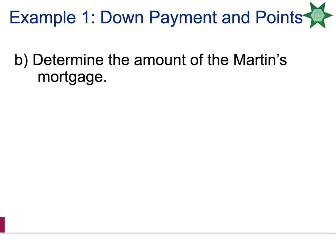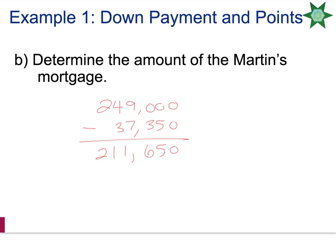Determine the amount of the Martins' mortgage. The purchase price of the home was $249,000 and the amount of their down payment is $37,350. If you subtract these, this will be how much they are borrowing from the bank — they need to borrow $211,650. So this will be the amount of their mortgage.